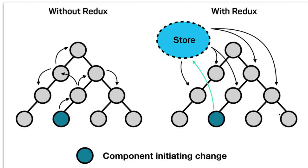Broadly there are three to four possible ways to manage state: option one is Redux; option two is useContext or useReducer hook in a functional component; option three is the Context API in a class-based component, putting things inside a global provider and creating consumer components at child levels.